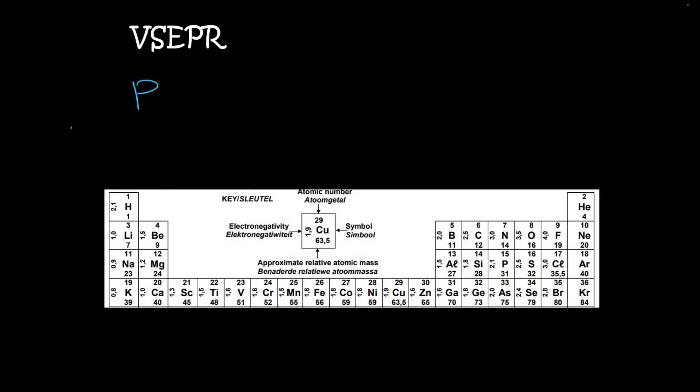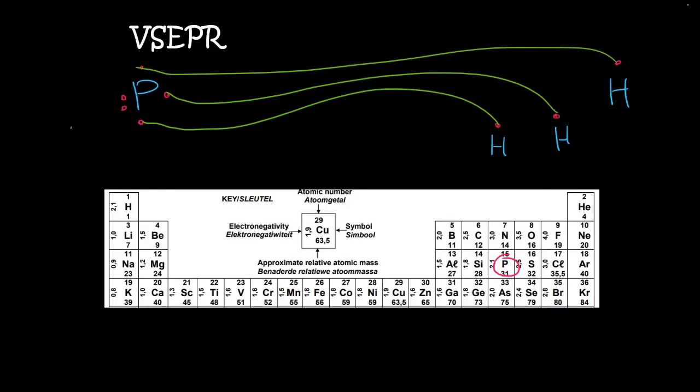Next we can do P, which is phosphorus and hydrogen. Now phosphorus is over here in group 5. So that's got 1, 2, 3, 4, 5 electrons. Whereas hydrogen only has 1. So we're going to need 3 hydrogens. So that this one could link there for example, this one over there, and that one over there.